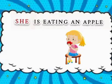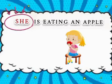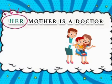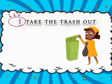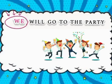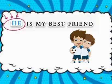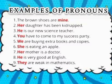We will understand the concept of pronouns by the following examples. 'She is eating an apple' — here 'she' is a pronoun. 'Her mother is a doctor' — 'her' is a pronoun. 'I take the trash out' — 'I' is a pronoun. 'We will go to the party' — 'we' is a pronoun. 'He is my best friend' — 'he' is a pronoun. 'It is raining today' — 'it' is a pronoun.